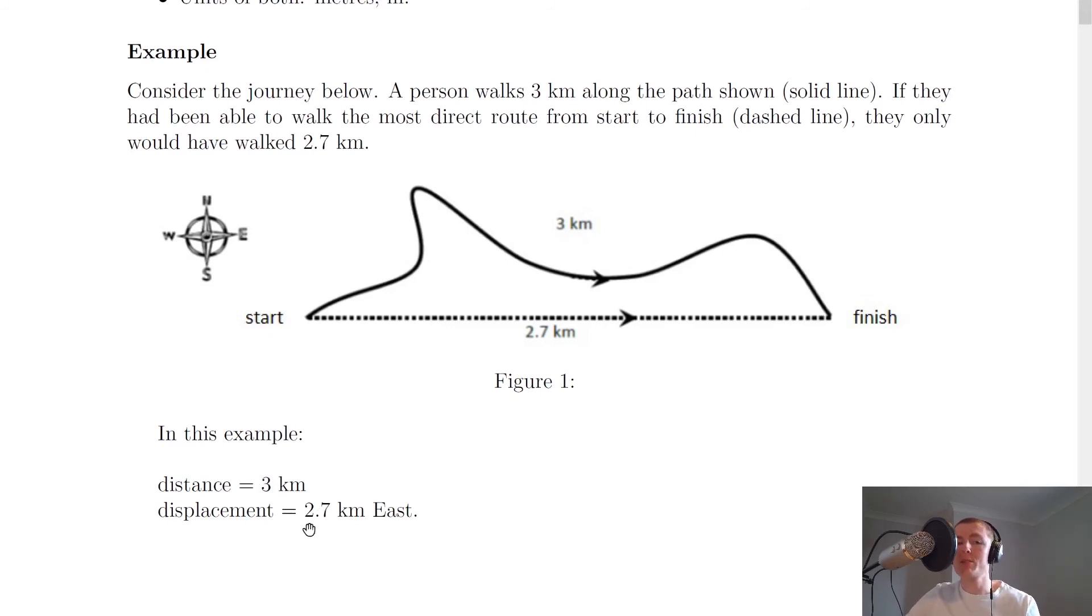So we can write the displacement as 2.7 km east, because that line is pointing towards the easterly direction. Or if you wanted to use bearings to define that direction, you could say 2.7 km at a bearing of 090.